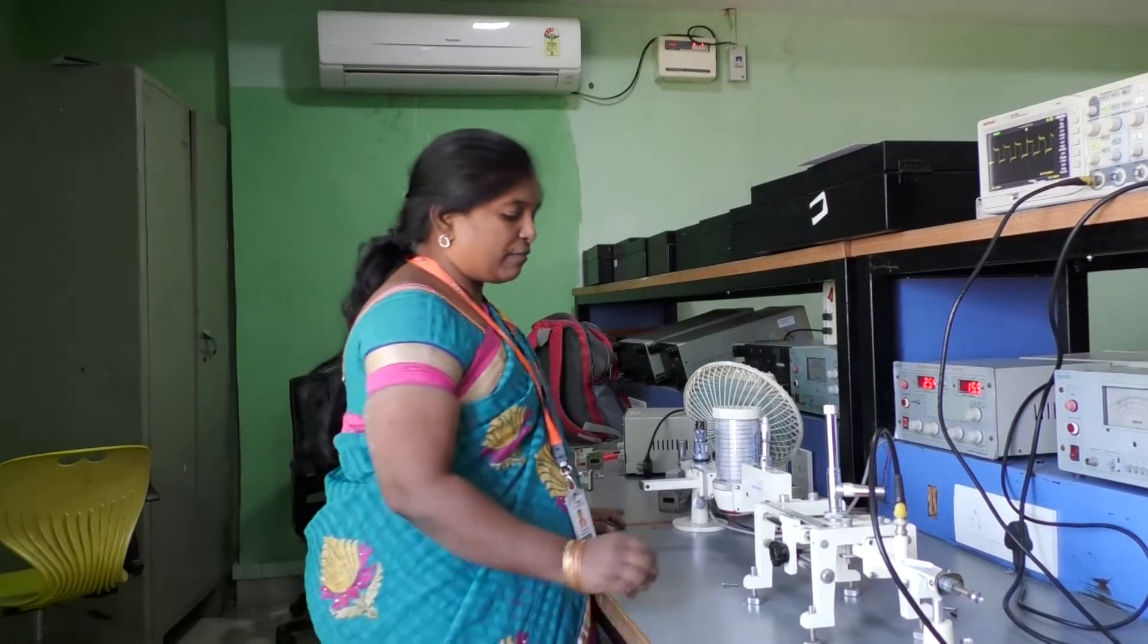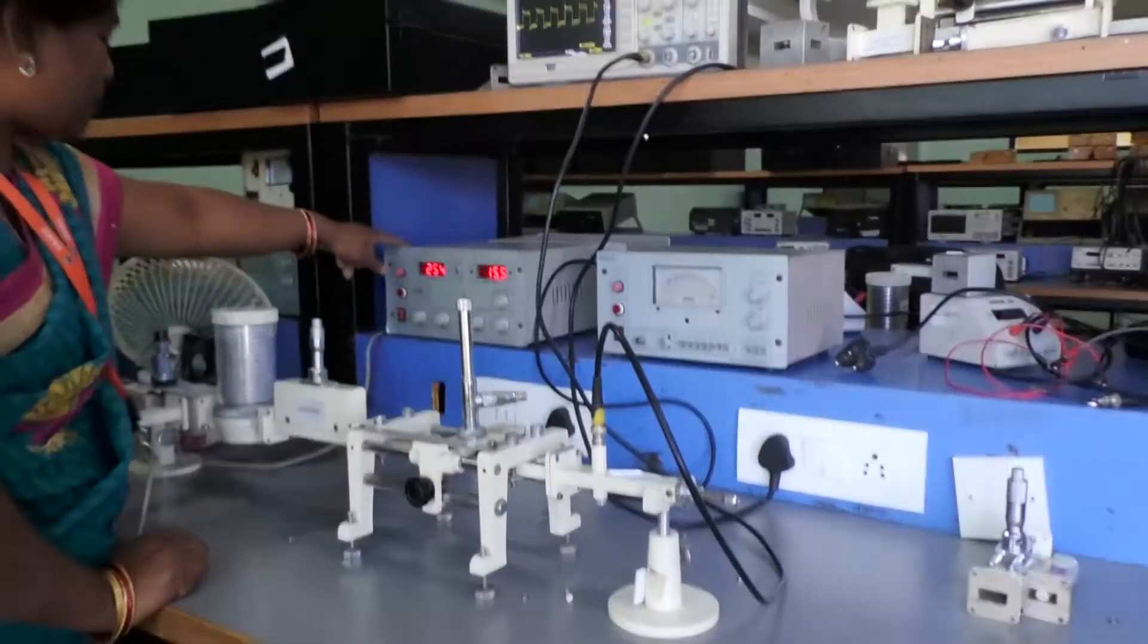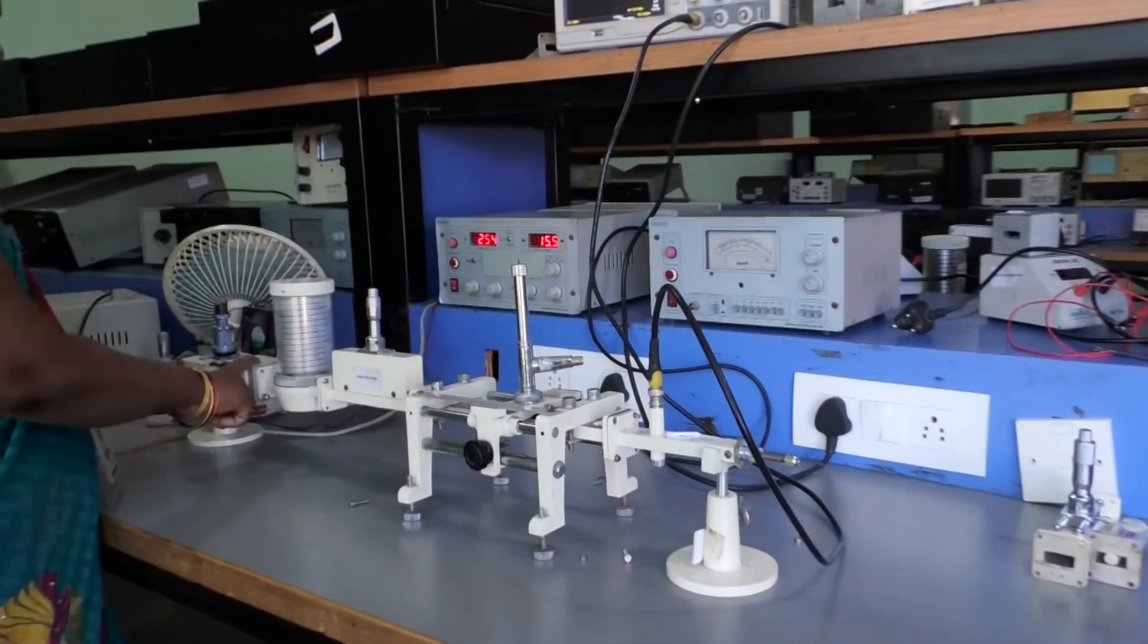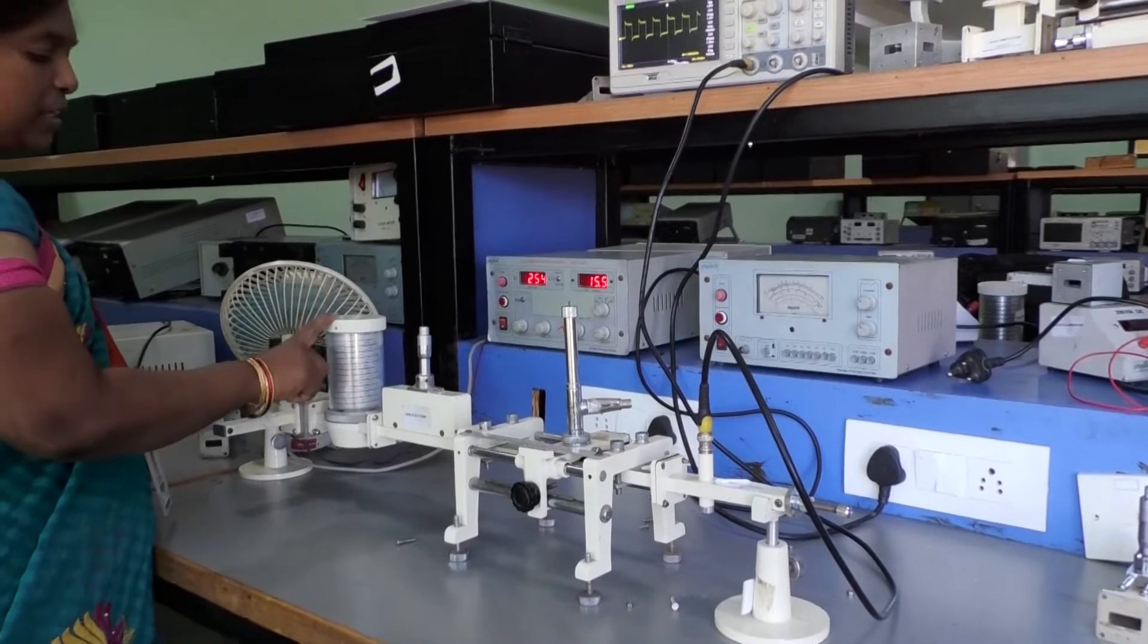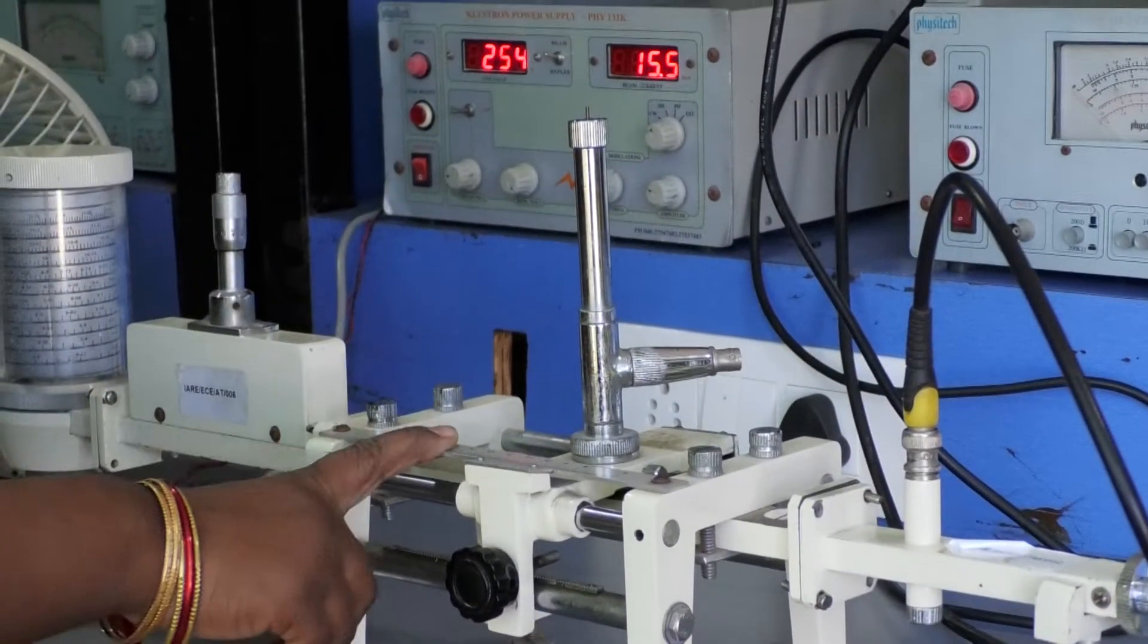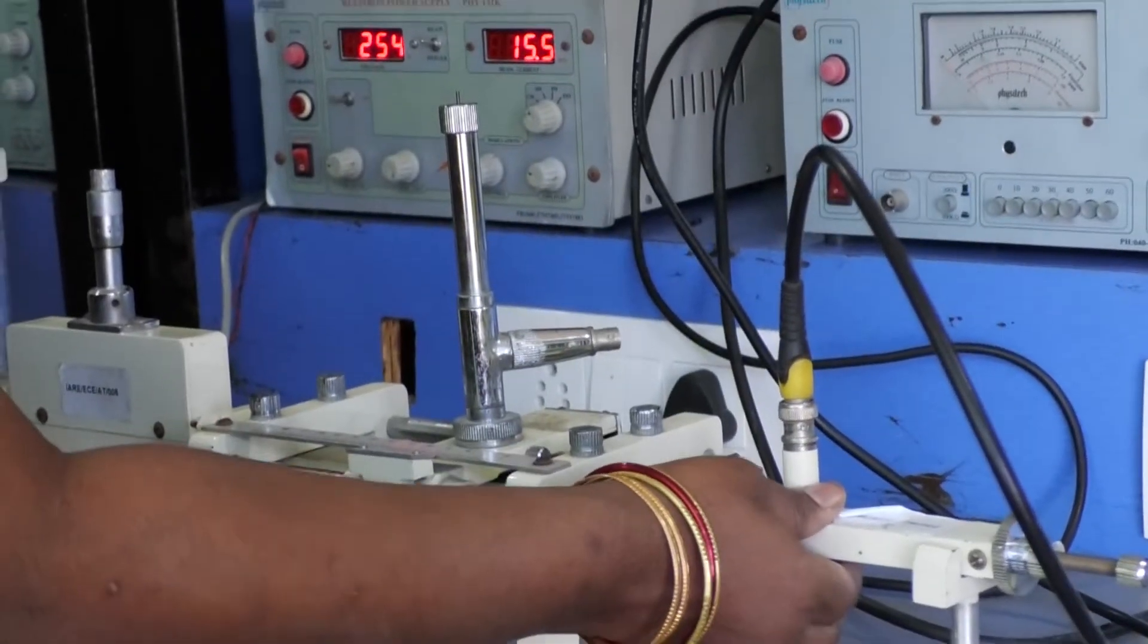The microwave bench setup required for this measurement is Klystron power supply, Klystron mount, isolator, frequency meter, variable attenuator, slotted line section and matched termination and detector mount.